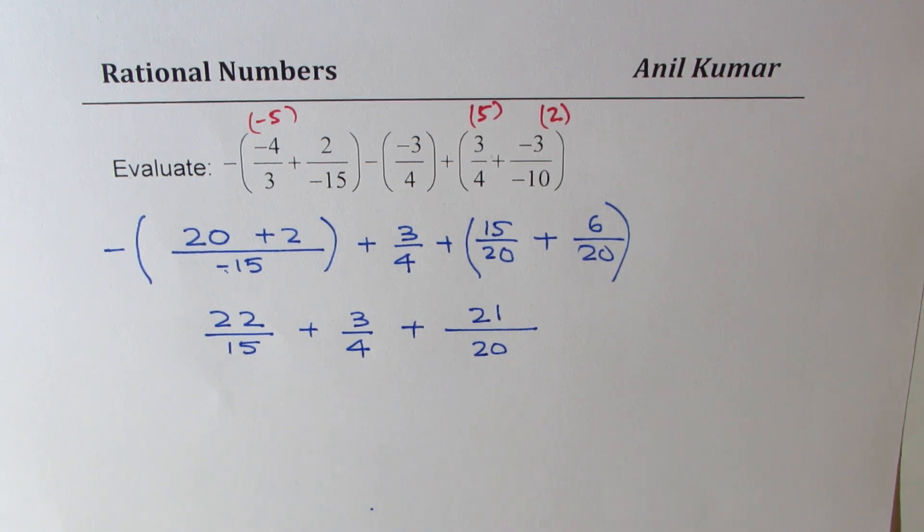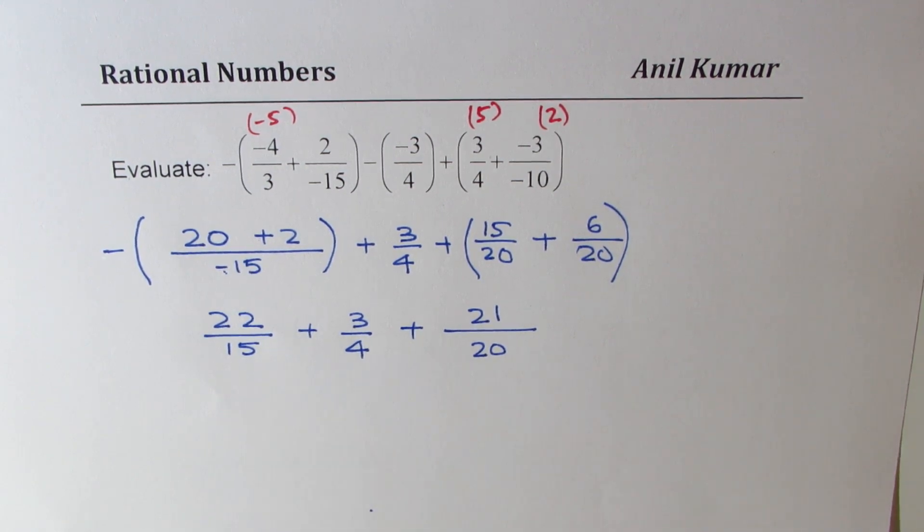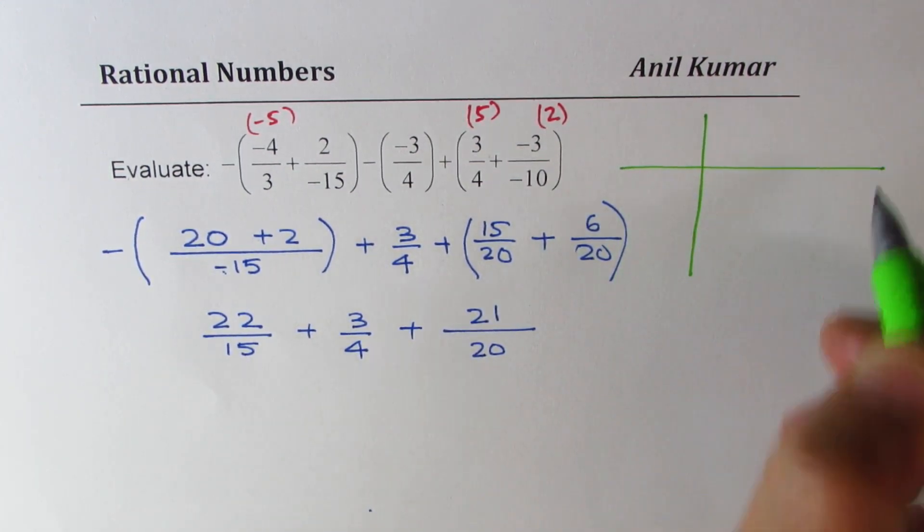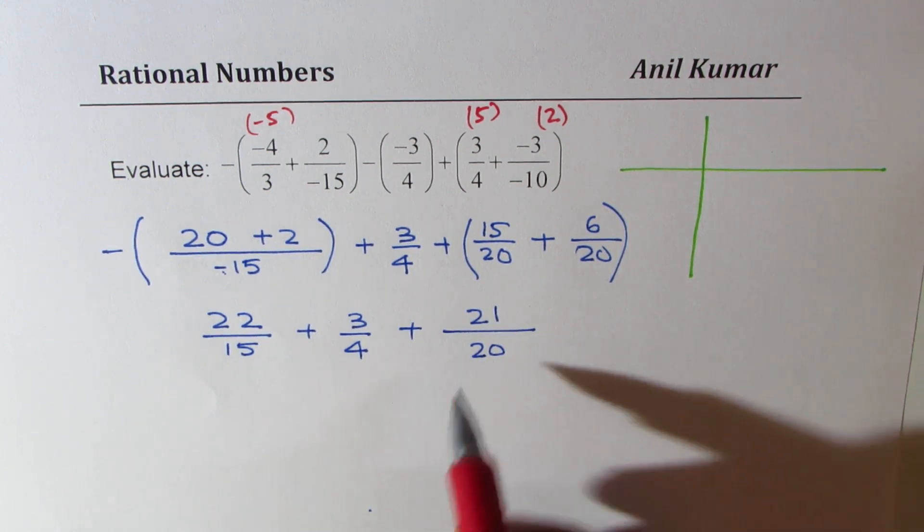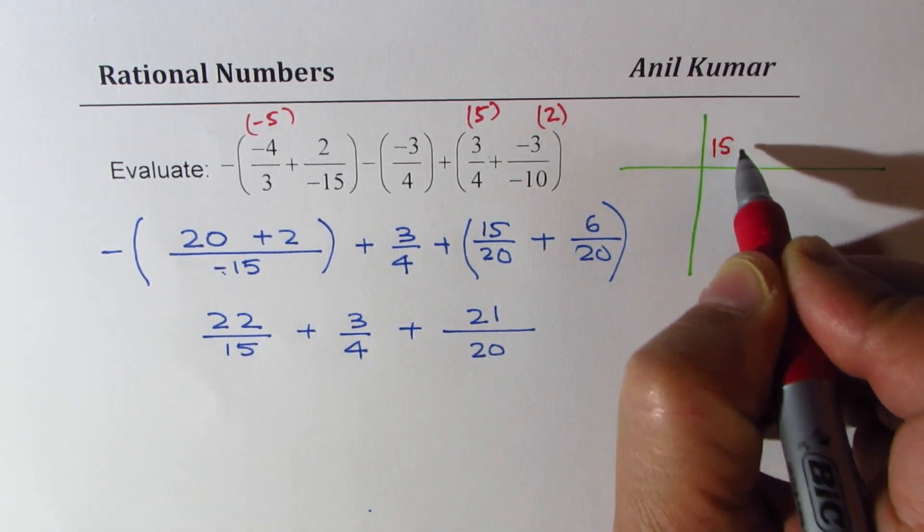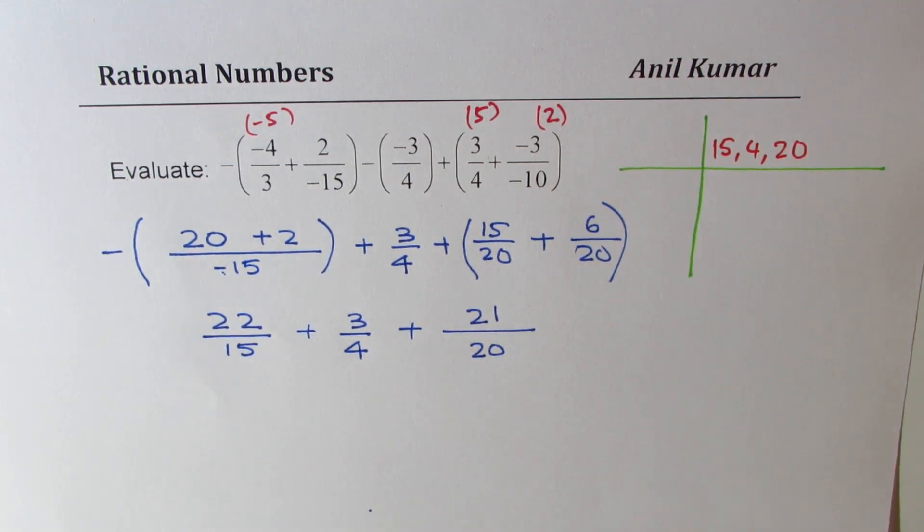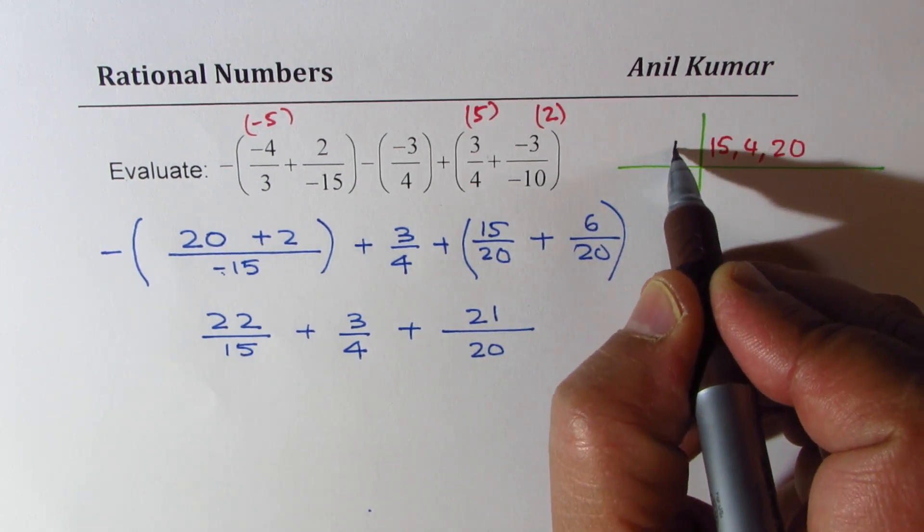Correct? So, that becomes 3 different fractions or rational numbers to be added. Now, we need to find what is LCM. To find the LCM, there are different methods. The LCM, as you know, is 60. But I am trying to show you here how to calculate LCM. So, the numbers here are 15, 4, and 20.